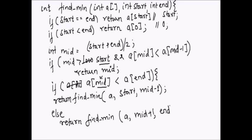This is the simple implementation of the algorithm that finds the minimum element in a sorted rotated array. The time complexity is O(log n). Watch more videos on algorithms and data structures for interview preparation. Thank you very much for your time — please subscribe, like, or comment on the video.